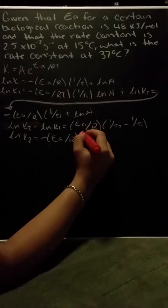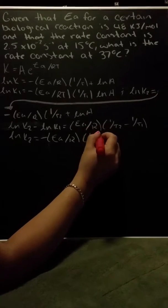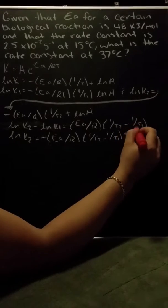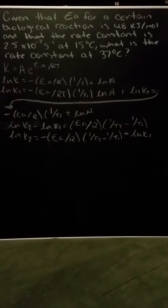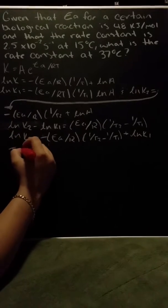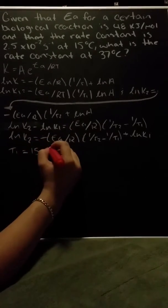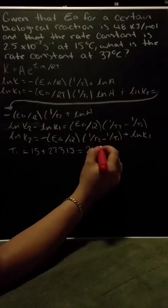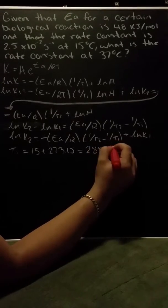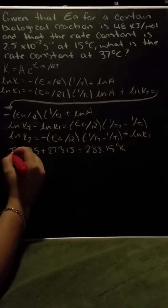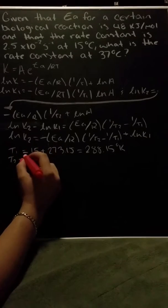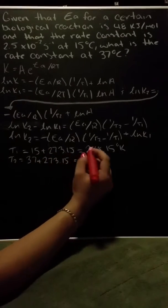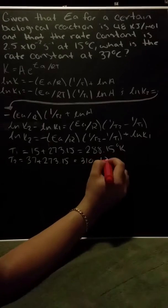Plugging in the temperatures: T1 equals 15 plus 273.15, which equals 288.15 Kelvin. T2 equals 37 plus 273.15, which equals 310.15 Kelvin.